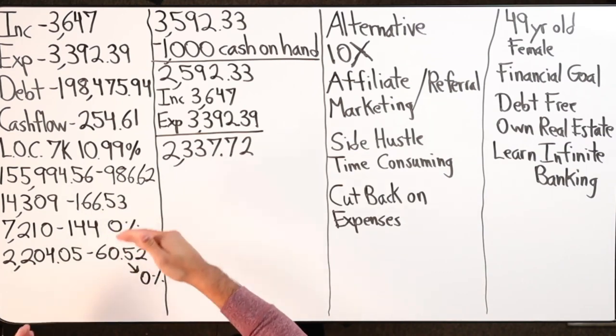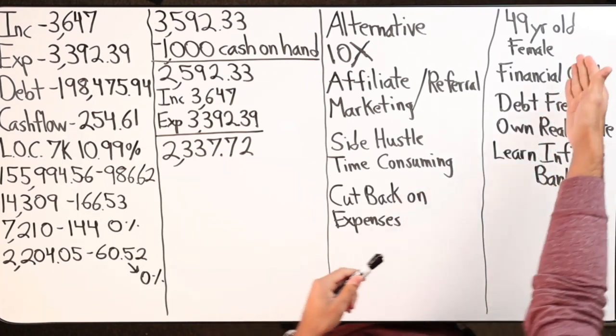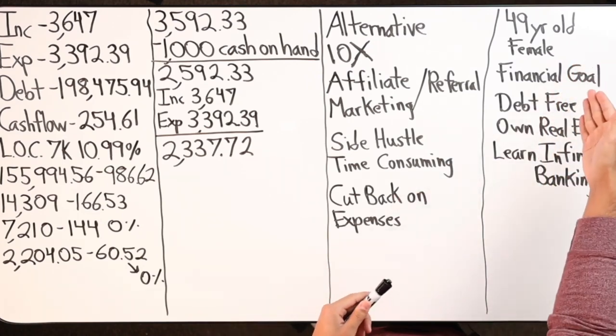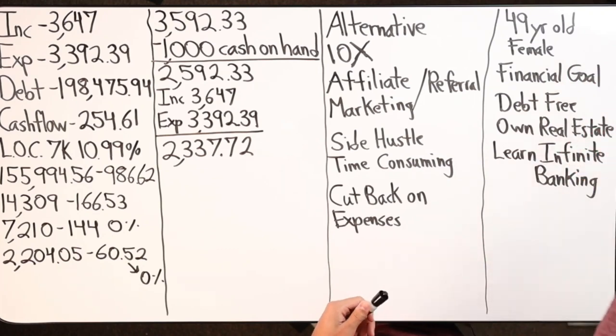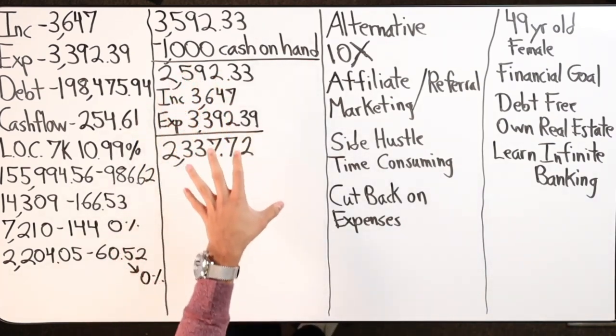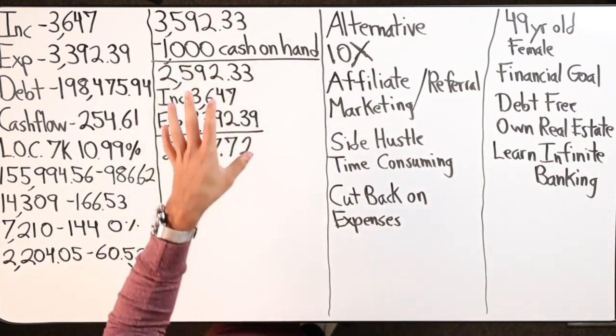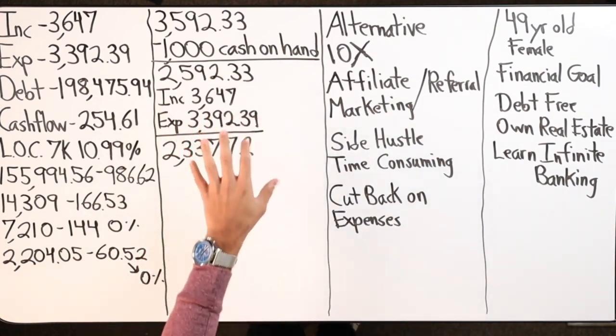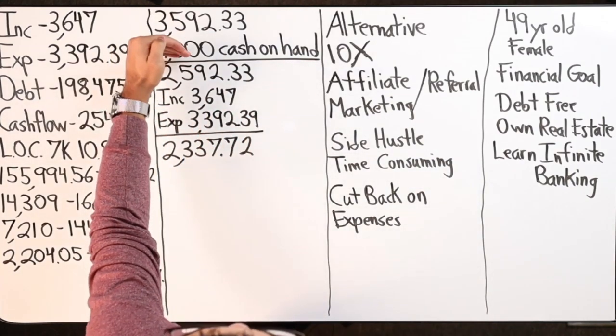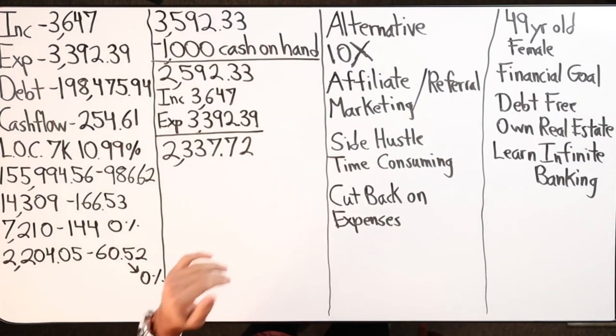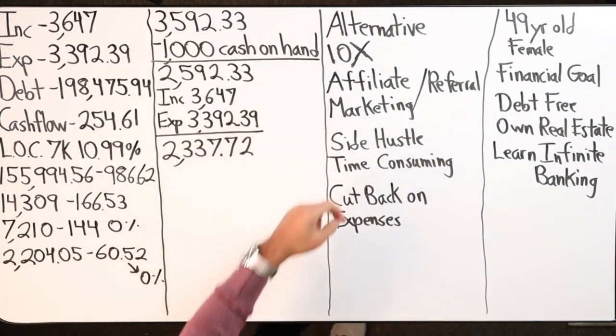49-year-old female, financial goal is to be debt-free, own some real estate. She wants to learn about the infinite banking concept. When I originally worked with her, in my notes, the last time we spoke was she had $1,000 cash on hand.